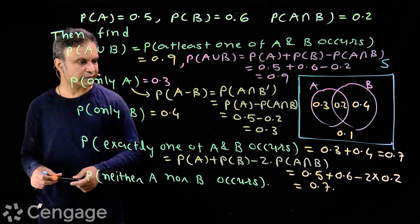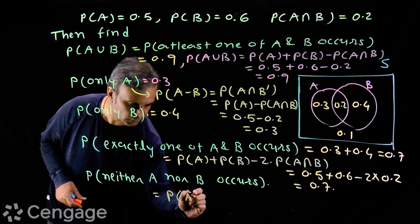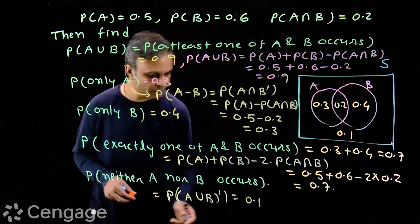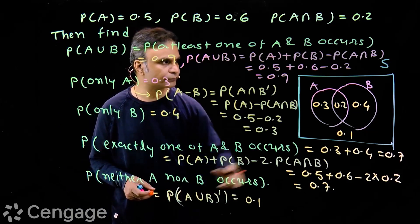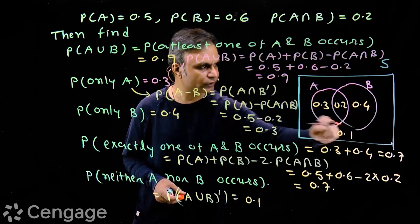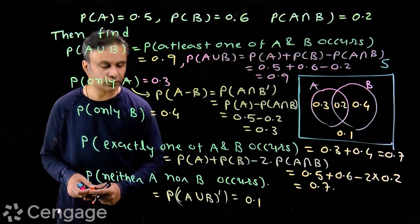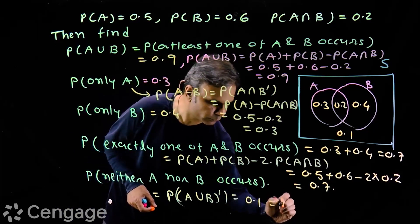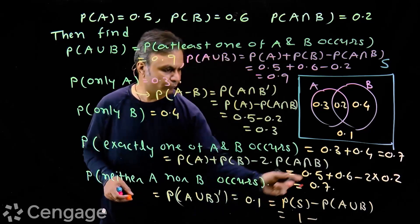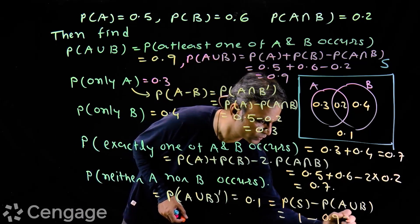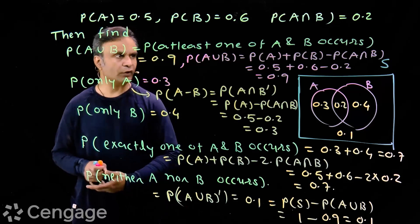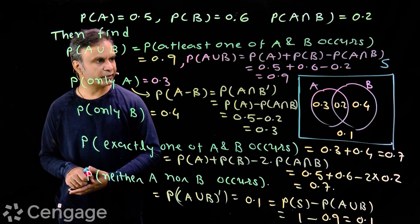The probability that neither A nor B occurs equals P(A∪B) complement, which is directly 0.1 — the outer region of sample space S outside A∪B. Using set theory: P(S) − P(A∪B) = 1 − 0.9 = 0.1. We are using both Venn diagrams and formulas — the addition theorem of probability.